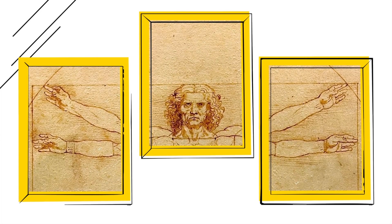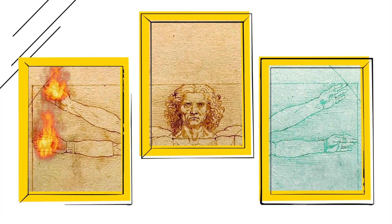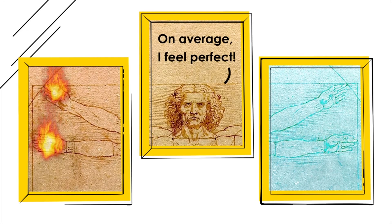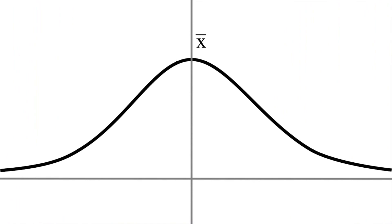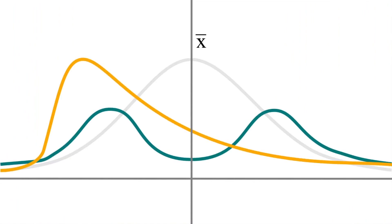This example demonstrates two things. First, the statistical view is different from an intuitive view. And second, the average is not always a representative value.